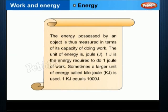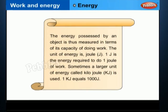The energy possessed by an object is measured in terms of its capacity of doing work. The unit of energy is joule, J. One joule is the energy required to do one joule of work. Sometimes a larger unit of energy called kilojoule, KJ, is used. One KJ equals 1000 J.